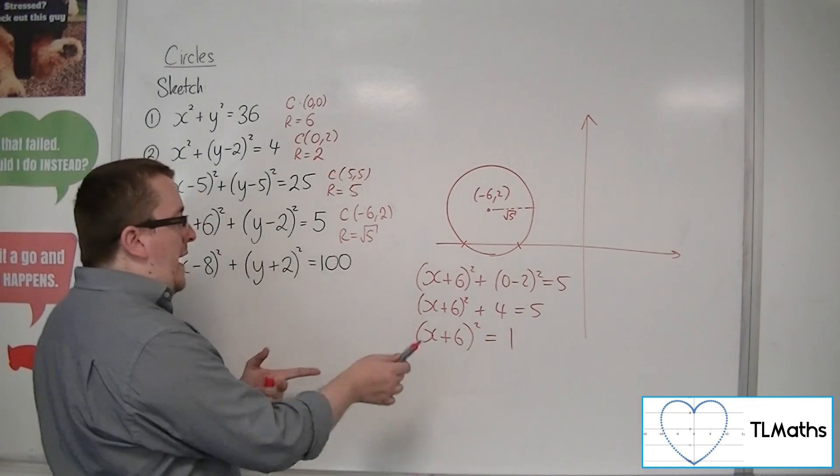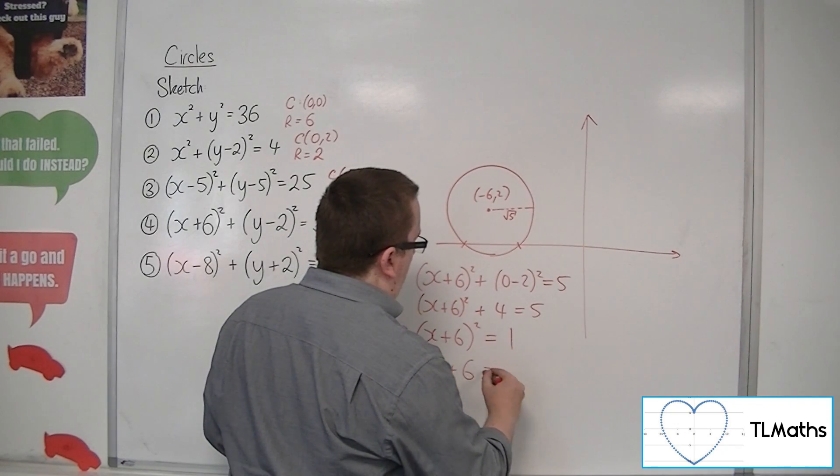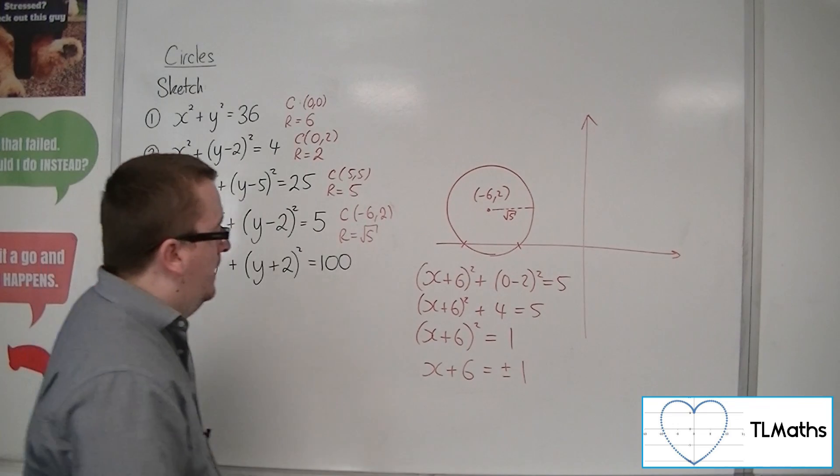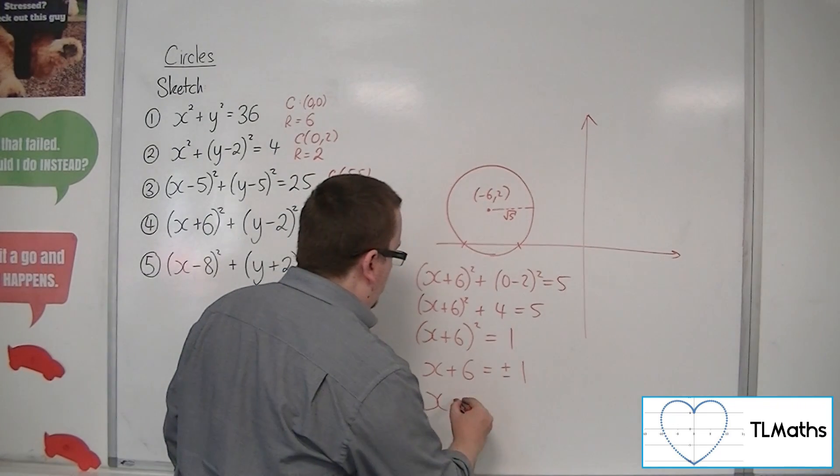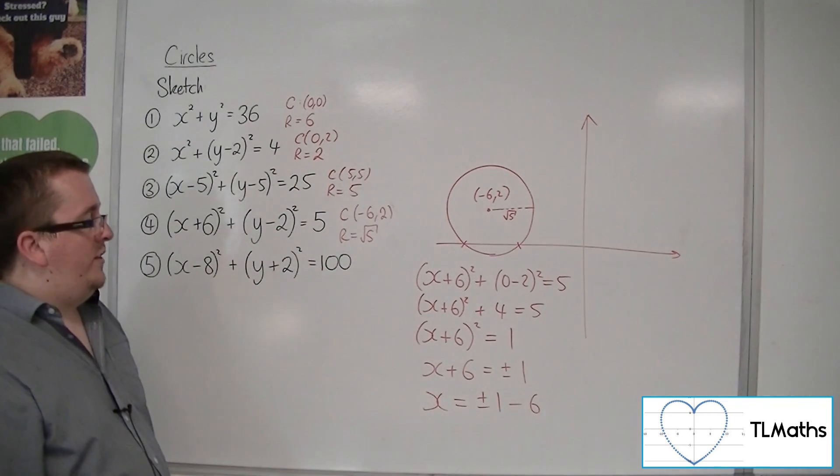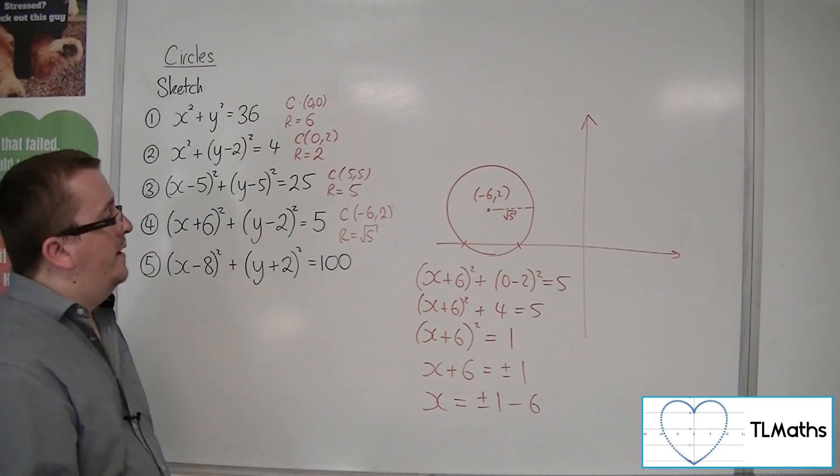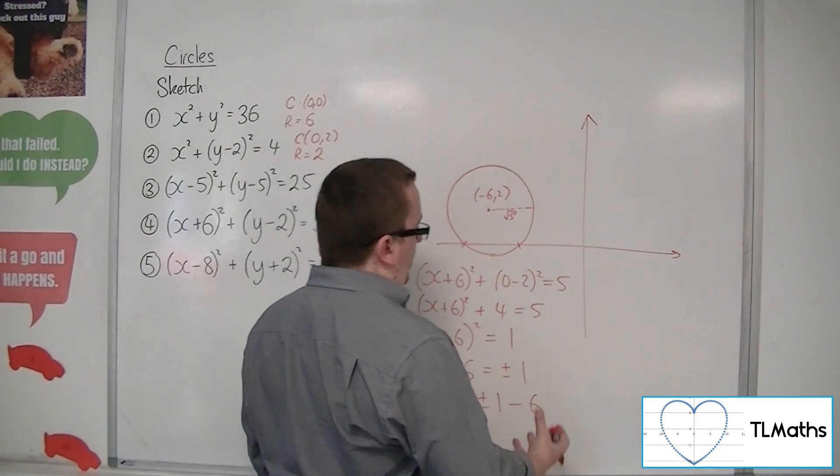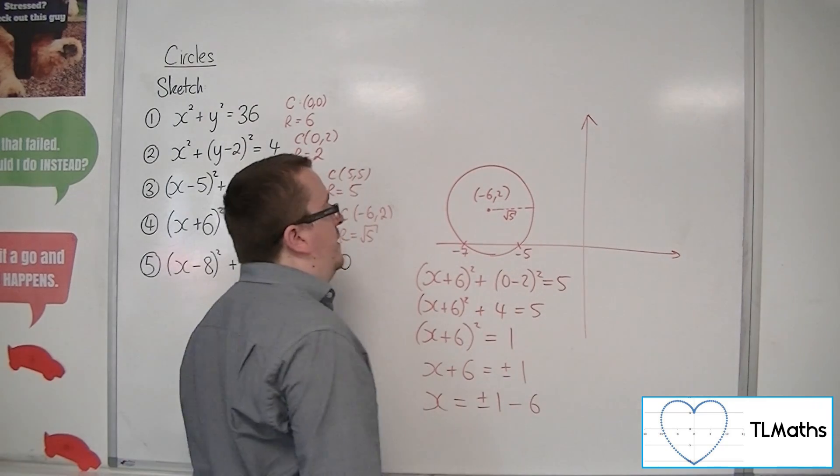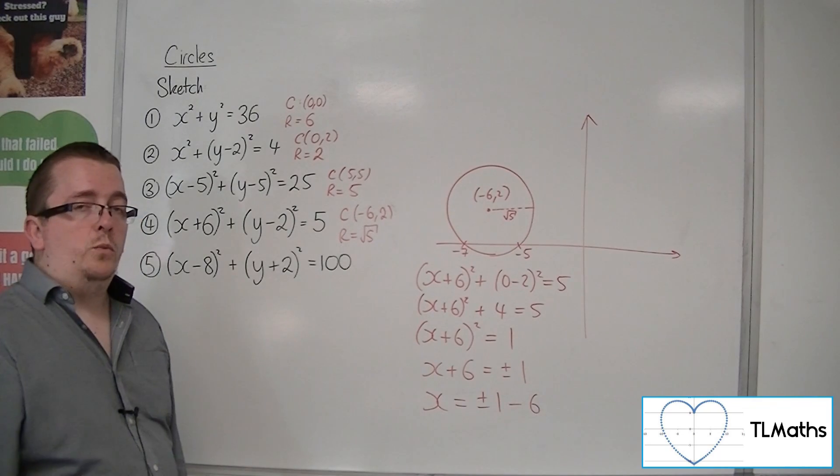So, then square root both sides. So, we get x plus 6 is plus or minus 1, so the square root of 1. And then subtract the 6. So, plus or minus 1, take away 6. So, 1 take away 6 is minus 5. Minus 1 take away 6 is minus 7. So, that must be minus 7. That must be minus 5. And that is what this circle will look like.